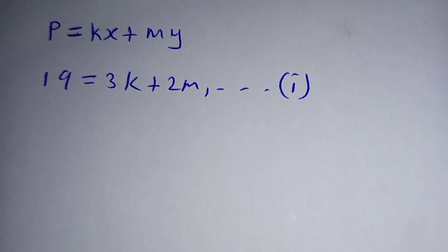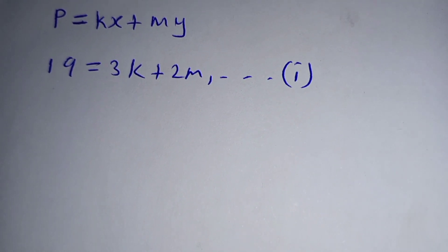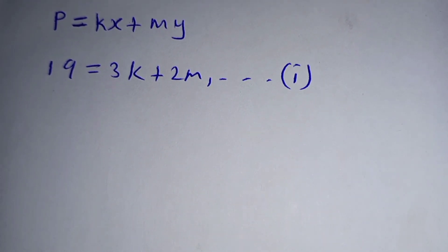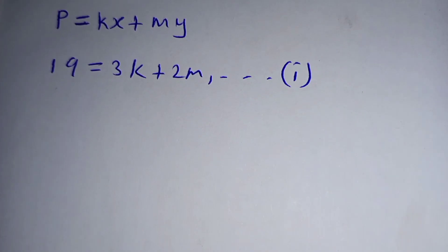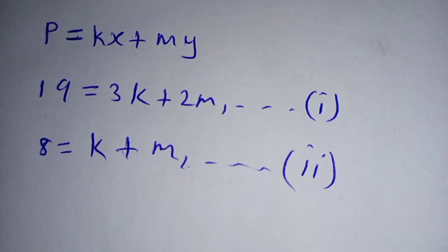The equation will be 19 is equal to 3K plus 2M. Then, when P is equal to 8 and X is equal to 1 and Y is equal to 1, we will form our second linear equation. So, 8 is equal to K plus M.